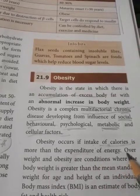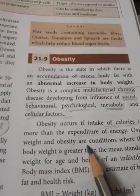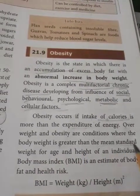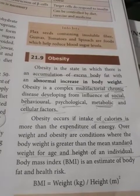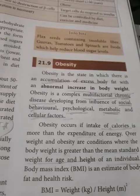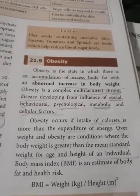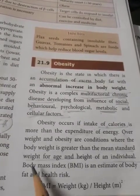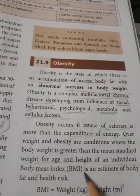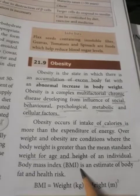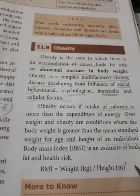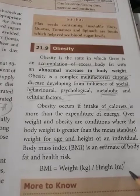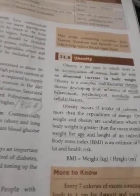Overweight and obesity are conditions where the body weight is greater than the mean standard weight for age and height of an individual. A certain standard body weight is needed to maintain a healthy condition. This is measured using the body mass index, or BMI. In obese people, the BMI will be more than the standard weight, and using the formula we can find out if the person is obese.